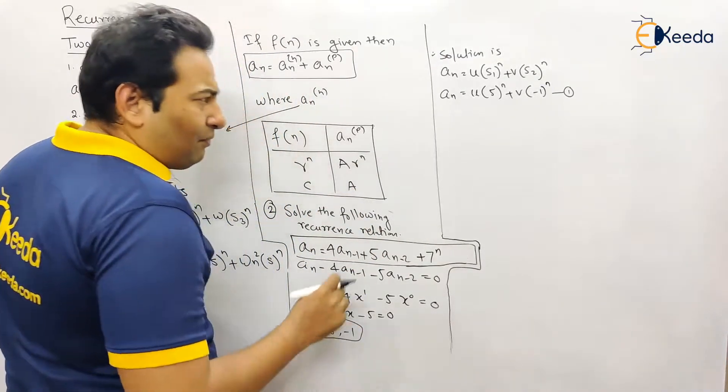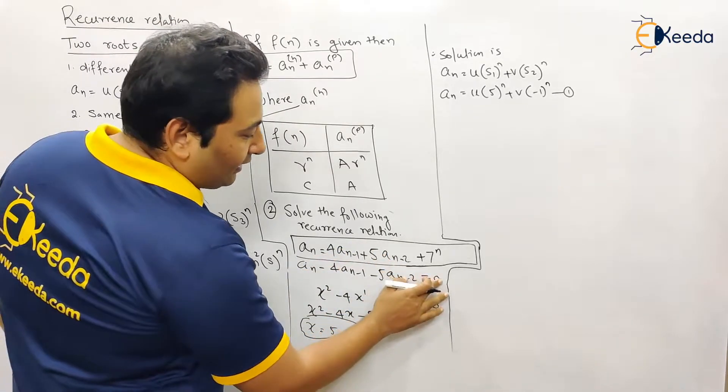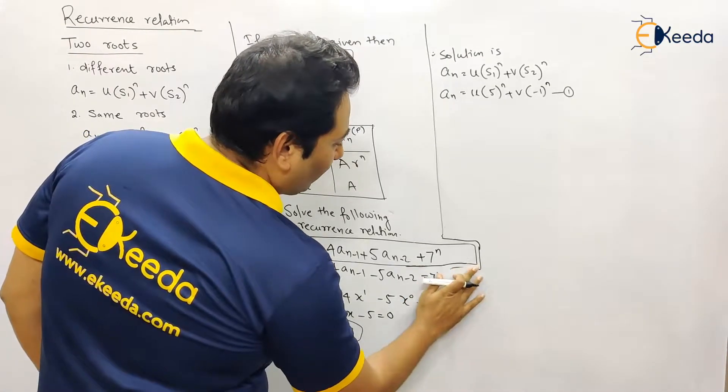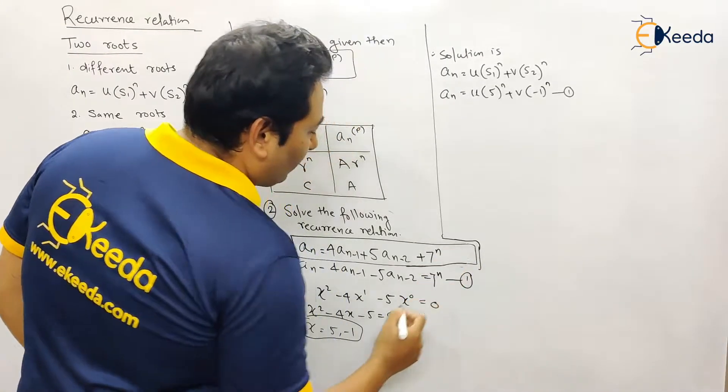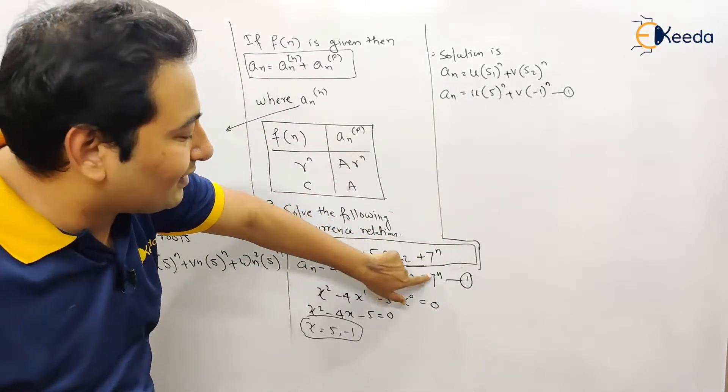So what is the first step? Now steps are similar. Take these terms to left hand side and here it will not be zero. Here it will be seven raised to n. So this is your equation number one.